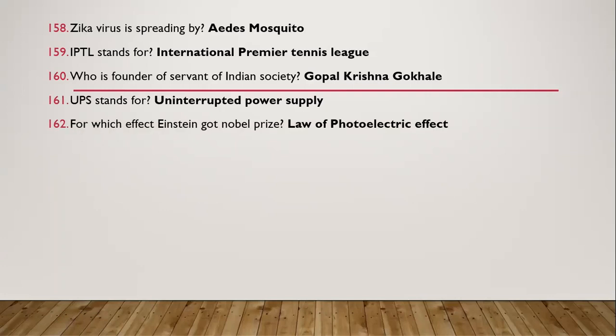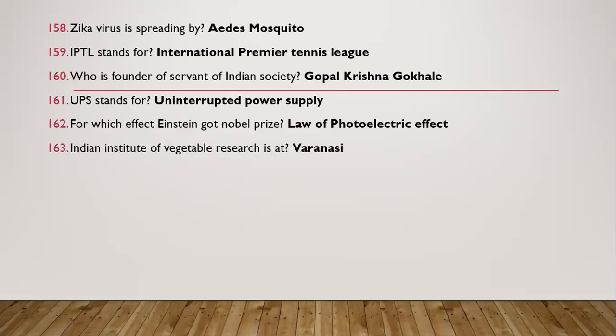Question 159: For which effect did Einstein get the Nobel Prize? It is for the law of photoelectric effect. Question 160: Indian Institute of Vegetable Research is at which place? It is at Varanasi.